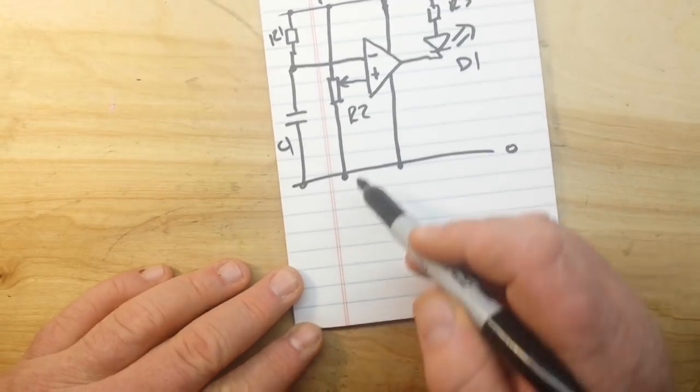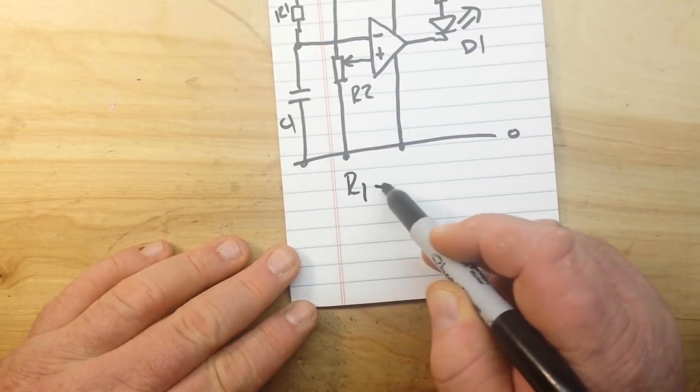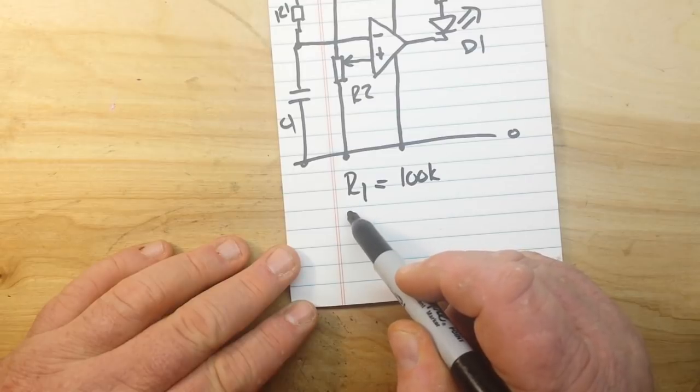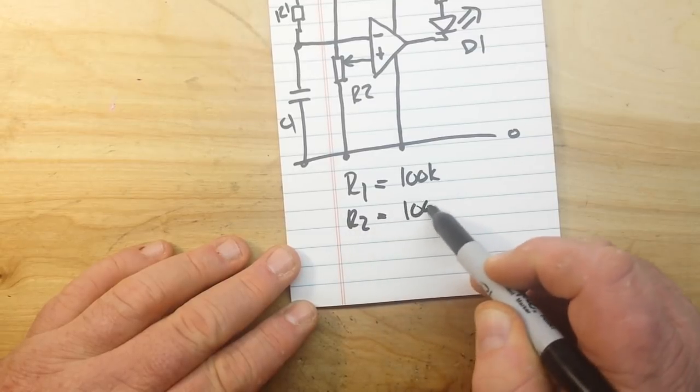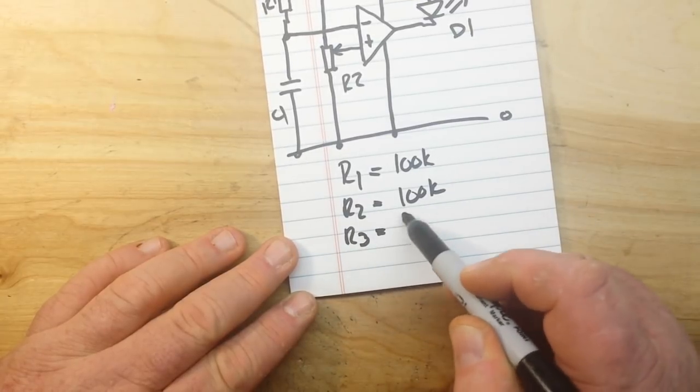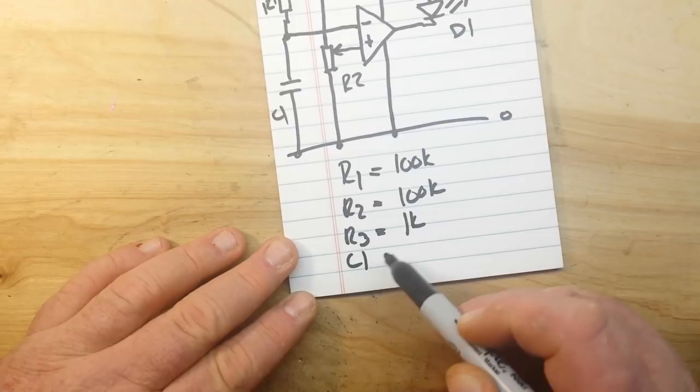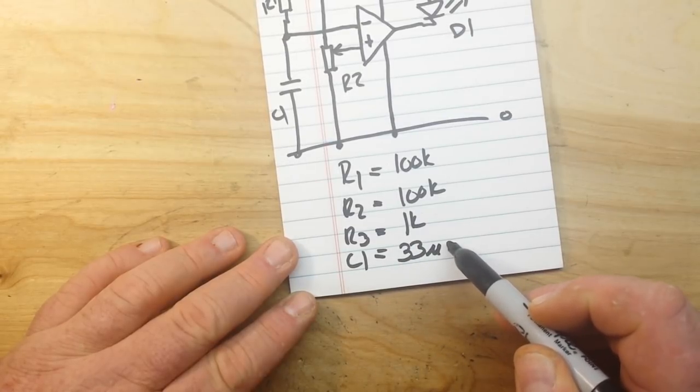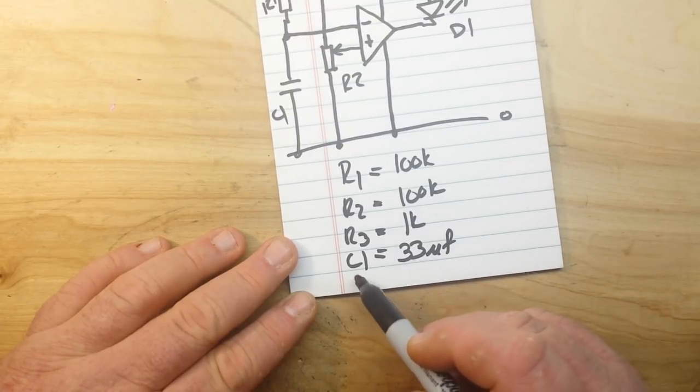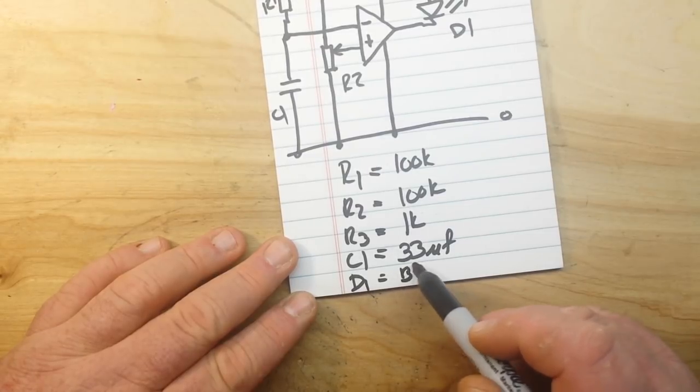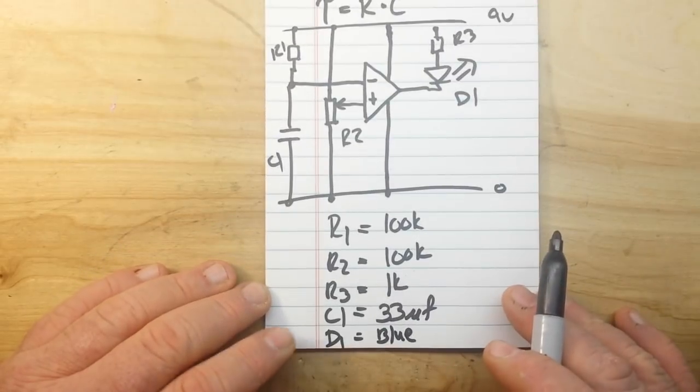So in this circuit here, we're going to do R1 equals 100k, R2 which is 100k, R3 is 1k, C1 is 33 microfarad, and D1 is a blue LED. So that's the whole circuit.